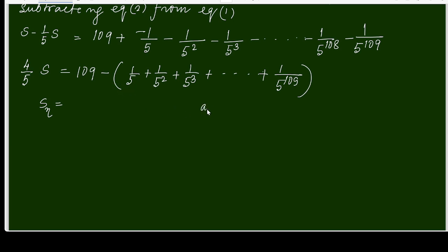This is a geometric series. Here the first term a is 1 by 5, and the common ratio r is 1 by 5. Since r is less than 1, I am applying the formula: S_n equals a into 1 minus r power n over 1 minus r.